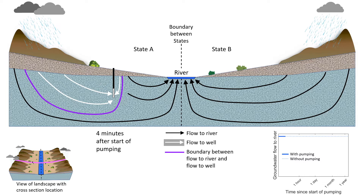As the video proceeds, the pumping will continue and you will see how the flow paths, the purple boundary, and the flow to the river change with time. In other aquifers, the timing and size of these changes could vary greatly. The changes could occur much faster or much slower than shown here depending on factors such as the pumping rate and the aquifer properties, and the change in flow to the river could be much different.